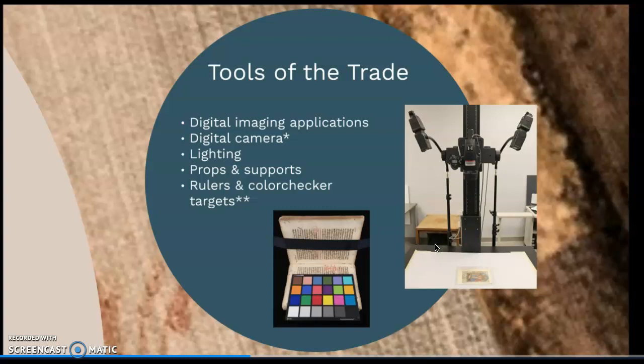Rulers and color targets are sometimes placed alongside manuscripts in the photos to give a sense of scale to the surrogate and to accurately allow for matching colors in the digital item to the original piece, as shown in the image below.